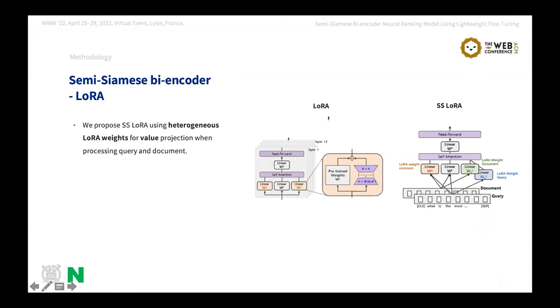First, we modified Lora for semi-Siamese structure. The original Lora paper introduced additional Lora weights like these to self-attention projection of the pre-trained BERTs. Among query, key, value of the self-attention projections, Lora intervenes only in the query and value. So, we construct semi-Siamese structure by inserting query-specific and document-specific Lora weights for making value vectors. In other words, Lora query weights are commonly used in both encoders, while Lora value weights are independently trained for each encoder in our semi-Siamese Lora.